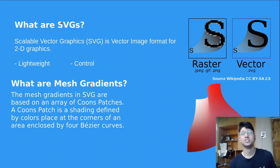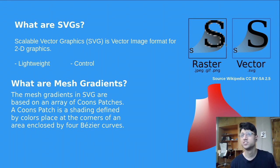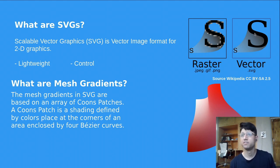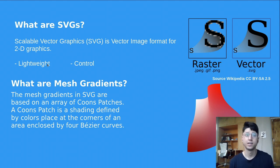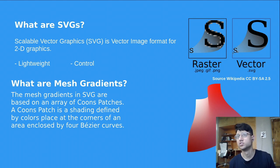One big difference between vector graphics and raster graphics is that if you zoom or scale them, you can see no pixelation or loss of quality in vector graphics, whereas you can see pixelation in raster images. Other features of vector graphics are that they are very lightweight and customizable — you can control the color, fill color, gradient, font type, etc.